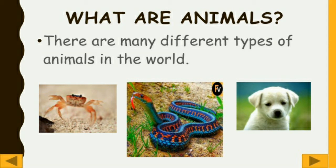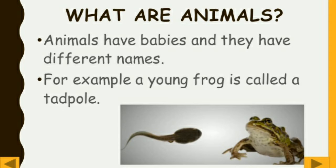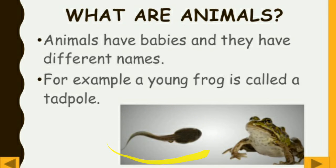There are many different types of animals in the world. Our world has many different kinds of animals like a dog, a snake, fish, and so many other types. Animals have babies and they also have different names. For example, a young frog is called a tadpole.